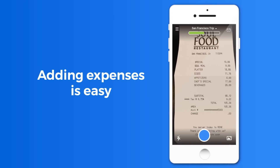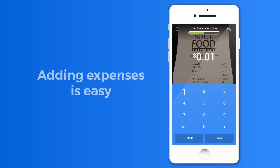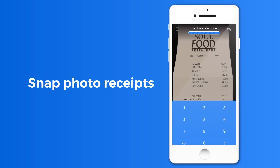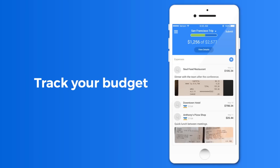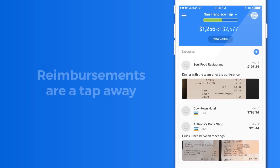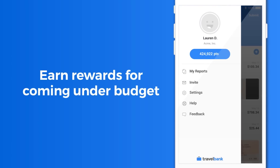Once your budget is approved, adding expenses is easy. Snap your receipts and our technology fills in the rest. Swipe to the right to track your budget. Submit for reimbursement and earn rewards for coming under budget.